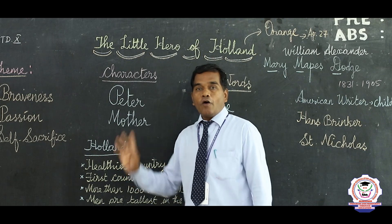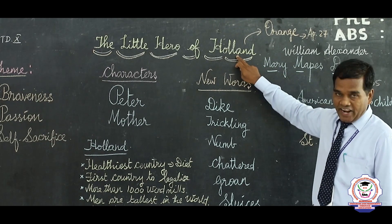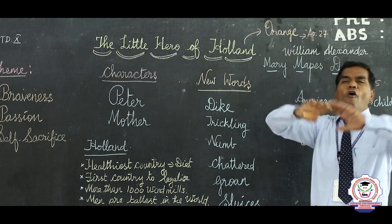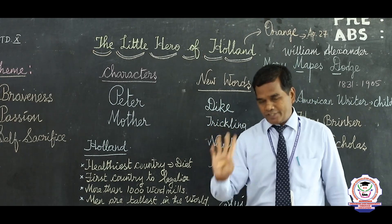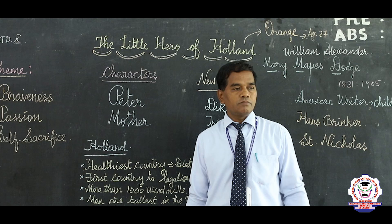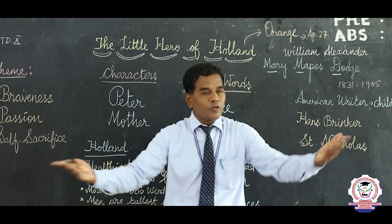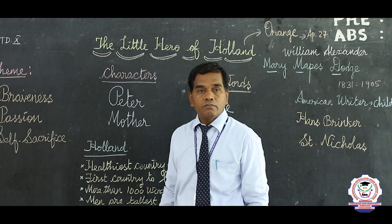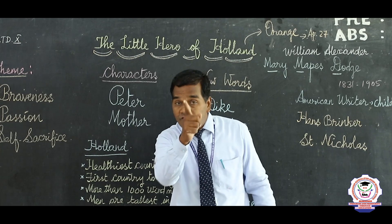So now we know the meaning of the word 'hero,' and we know that Holland's other name is Netherlands, its national color is orange, and every year on April 27th citizens celebrate King William Alexander's birthday. At the end of this lesson, you will come to know how you can become a hero wherever you are — you will become a real hero when you sacrifice yourself for the cause of the people.